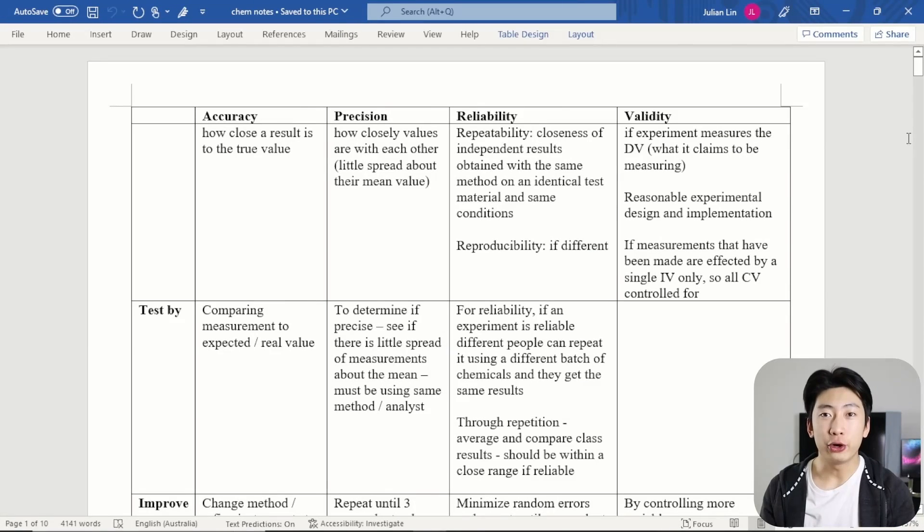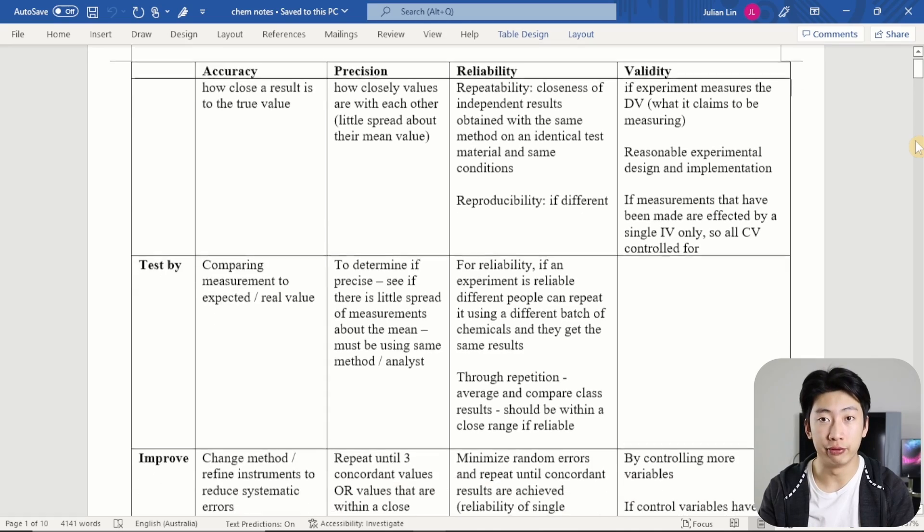So I set up a document like this. First, I had a table summarizing the definitions of these four key terms: accuracy, precision, reliability, and validity, as well as how to test them and improve them.